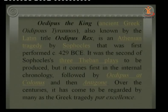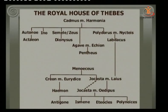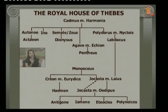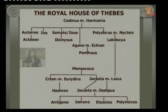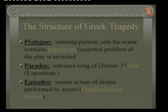To understand the Theban play, we need to know the royal house of Thebes. Cadmus was the first king of Thebes and married Harmonia. He had several children, from whom descended Labdacus, whose son was Laius, who married Jocasta. Our story of Oedipus Rex begins with Jocasta married to Laius.